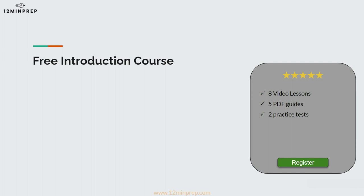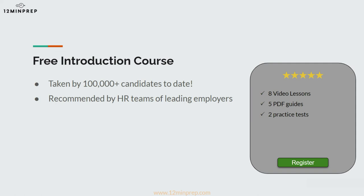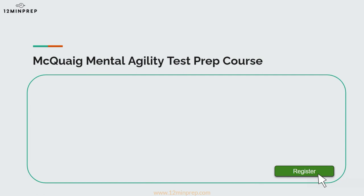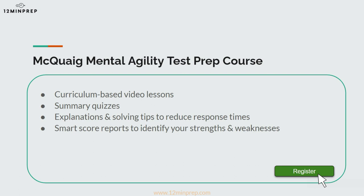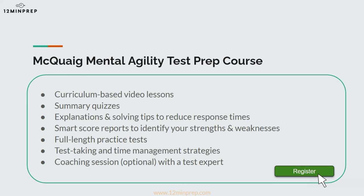You can start by taking a free introduction course on our website, which has helped over 100,000 candidates to date and is listed as a recommended resource among recruiters and HR teams. There is also the option of taking a paid prep course created specifically for the McCaig Mental Agility Test. You will get a 360 preparation experience including video lessons for each question type, summary quizzes with explanations and solving tips to reduce response times, score reports to identify your strengths and weaknesses, full-length practice tests to simulate real test conditions, test-taking and time management strategies, and the option for a one-on-one coaching session with a test expert. Start maximizing your score potential with 12-minute prep today.